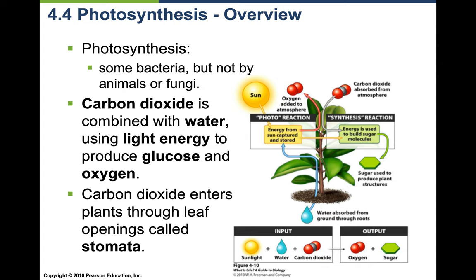Photosynthesis: some bacteria perform it, but no animals or fungi do. It's the process where carbon dioxide is combined with water, using light energy, to produce glucose and oxygen. This is why plants are so valuable — they produce the oxygen we breathe and the glucose that runs our cellular respiration. Carbon dioxide enters the plant through stomata, which are openings on the underside of the leaf.